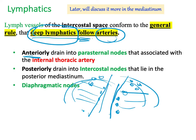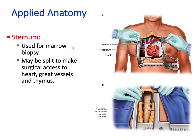Clinically, the sternum — the anterior border of the thoracic cage — can be split in a sternotomy to gain access to the chest, heart, great vessels, and thymus gland. Regarding rib fractures: this is a very painful condition because the periosteum of the ribs is supplied by intercostal nerves above and below.